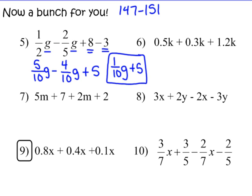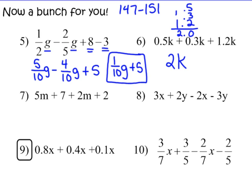Number 6: 5 tenths k plus 3 tenths k plus 1 and 2 tenths k — all k terms, so all three can be added together. Line up the decimal points carefully. 5 and 3 is 8, and 2 makes 10 — carry over the 1 — giving 2 and no tenths k, which I can write simply as 2k. That's my monomial answer, a single-term answer.